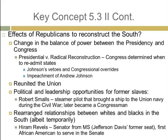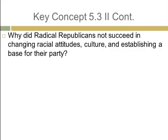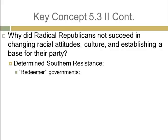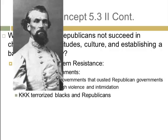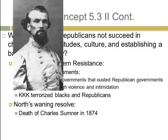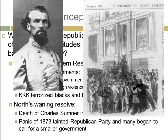Why did Radical Republicans not succeed in changing racial attitudes, culture, and establishing a base for their party? There was heavy, determined Southern resistance through the establishment of Redeemer Governments — local and state governments that ousted Republican governments, often through violence and intimidation. The KKK, founded by Nathan Forrest, terrorized blacks and Republicans. The North also had a waning resolve — meaning a decrease or reduction in commitment. The death of Charles Sumner in 1874 and the Panic of 1873 caused many Republicans to focus on other issues, and many began to call for a smaller government.